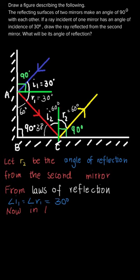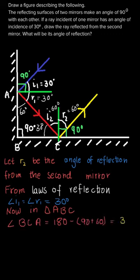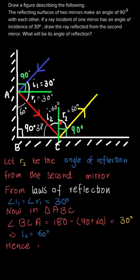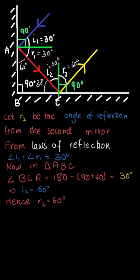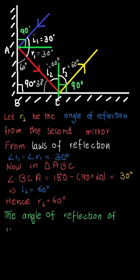In triangle ABC, angle BCA equals 180 minus (90 plus 60), which is 30 degrees. Since this angle is 30 degrees and the normal is 90 degrees, i2 equals 90 minus 30, which is 60 degrees. Therefore r2 equals 60 degrees. The angle of reflection of the incident ray from the second mirror is 60 degrees.